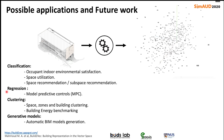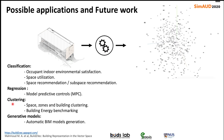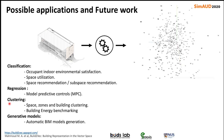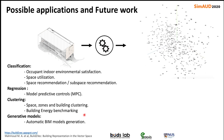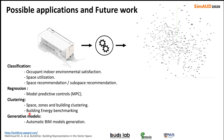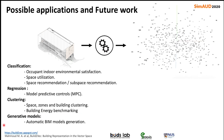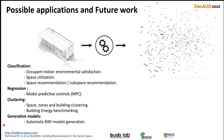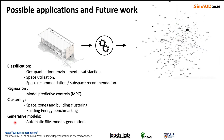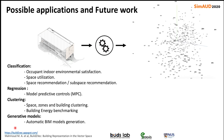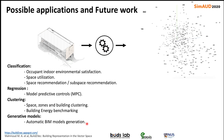For regression, we can use this in model predictive control. For clustering, we can apply this to spaces, zones, or building clustering, as well as building energy benchmarking. This application is also very promising for generative models — we can use it for automatic building information model generation.